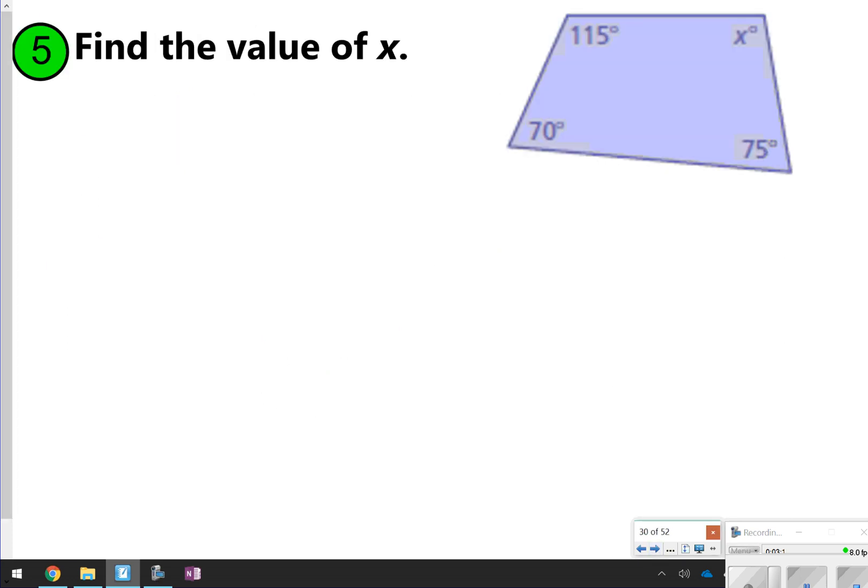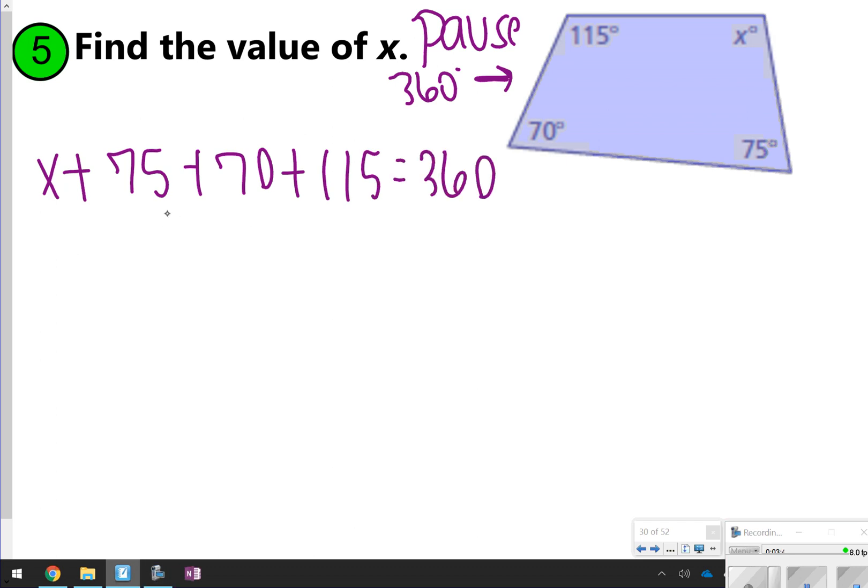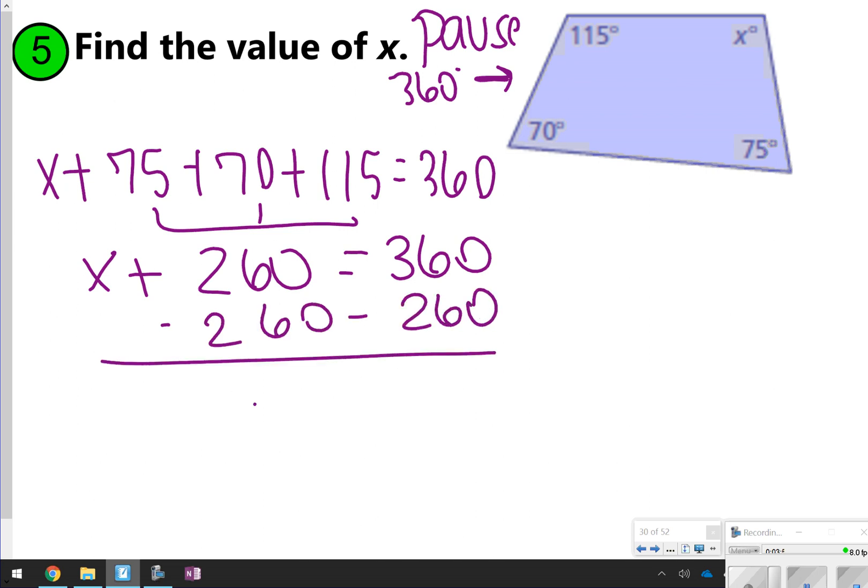So here's one that you're going to try by yourself. You kind of already understand the process, so I'm going to let you start this one on your own. Go ahead and take time now to pause the video. Remember, all of those should be equal to 360 degrees. So once you're done trying, you've got x plus 75 plus 70 plus 115 equals 360. When you add all three of these numbers together, you get 260. So x plus 260 equals 360, and then you're just subtracting to get your answer. x equals 100.